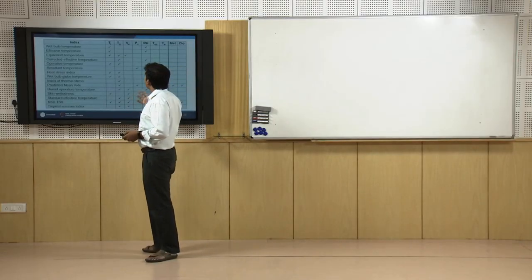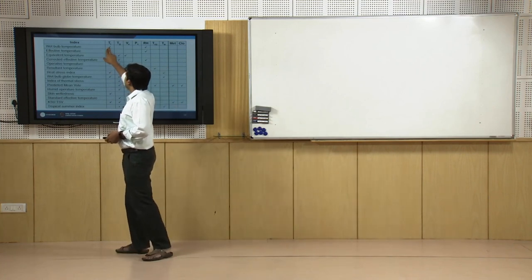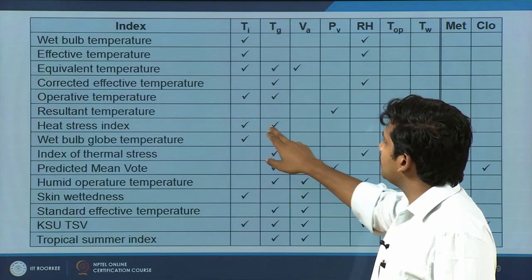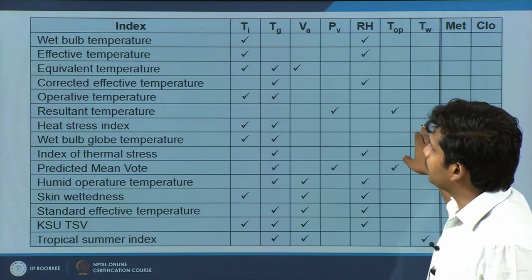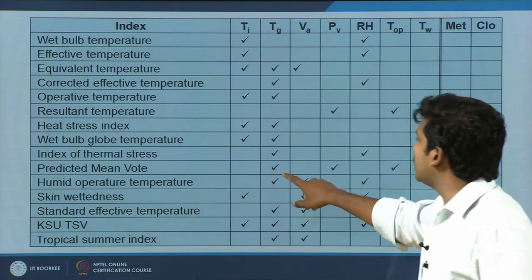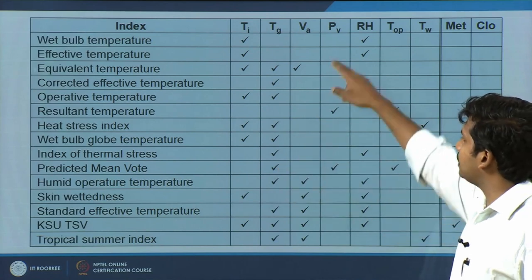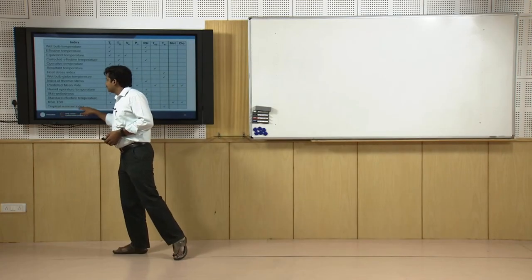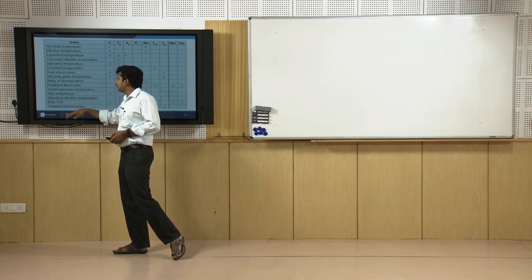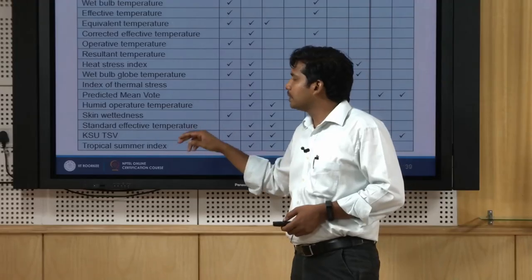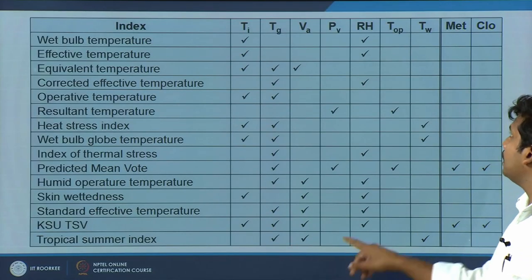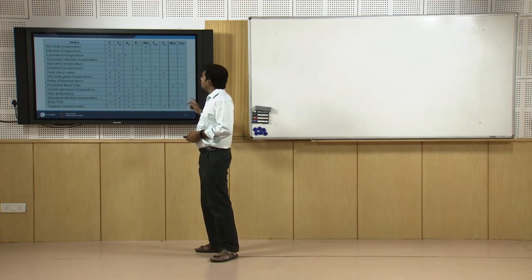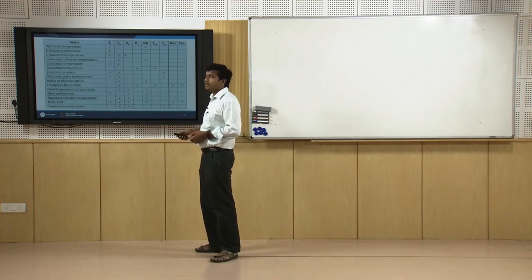Wet bulb temperature takes air temperature and relative humidity into consideration. Heat Stress Index takes indoor dry bulb temperature, globe temperature, and wet bulb temperature into account. Predicted Mean Vote (PMV) takes globe temperature, vapor pressure, operative temperature, and two personal variables — metabolic activity and clothing insulation. The Tropical Summer Index includes globe temperature, air velocity, and wet bulb temperature, but does not include metabolic activity or clothing insulation — environmental parameters only.